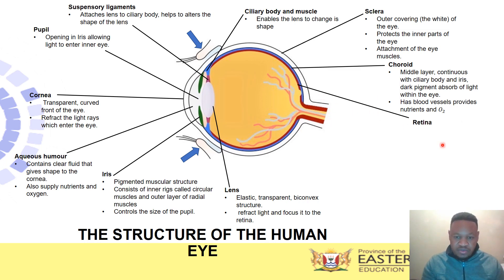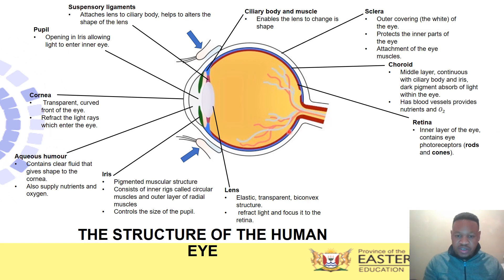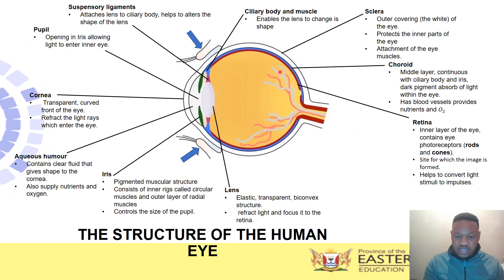The choroid also has blood vessels that supply oxygen and nutrients to the eye. Moving on to the innermost layer — this is called the retina. This is the site where the image is formed. The retina also contains photoreceptors — the receptors that convert what we see into impulses so the brain can interpret what we are seeing. The image forms on the retina and is converted into an impulse, which is sent to the brain.